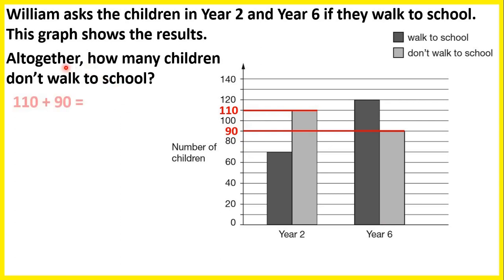So to find the number altogether, we need to work out 110 plus 90, so that's 200 children.